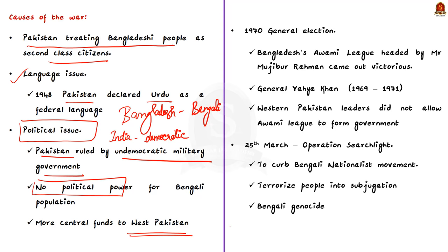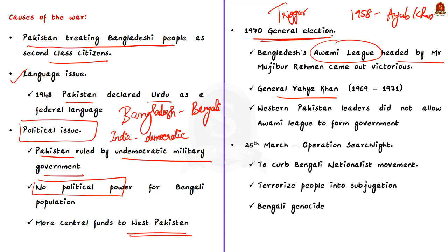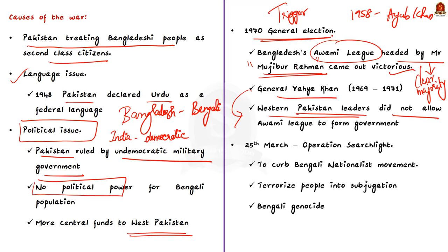The trigger came in the form of the 1970 general election. In Pakistan, General Ayub Khan had been in power since 1958 followed by General Yahya Khan. But after the 1970 election, Awami League of Bangladesh headed by Mujibur Rahman came out victorious with a clear majority, making him set to become Prime Minister. This did not go down well with the leaders of Western Pakistan, mainly Ayub Khan, who was not willing to let a leader from its eastern provincial wing — present-day Bangladesh — rule the country.